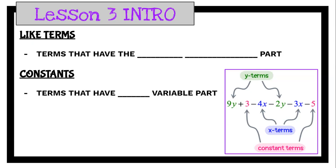And these are terms that have the same variable part. If you look at our example down here, we have the Y terms. So they have a Y variable, so those would be like terms. And then we have X terms, which both have that X as their variable.